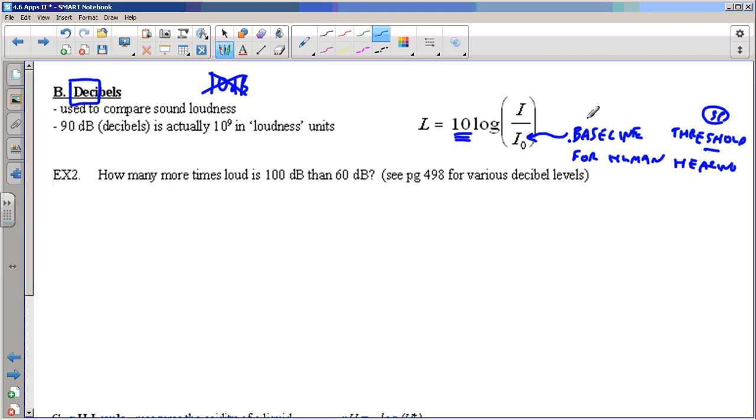Just like in the earthquake one, we went back to a baseline. So how many more times loud is 100 decibels than 60 decibels? In your textbook, page 498 has various things that are so many decibels, like a car going by or human speech, or a pin drop would be one decibel. Zero decibels would be the threshold of human hearing. We can see the decibel difference is 100 subtract 60, that's 40 decibels, a 40 decibel difference.